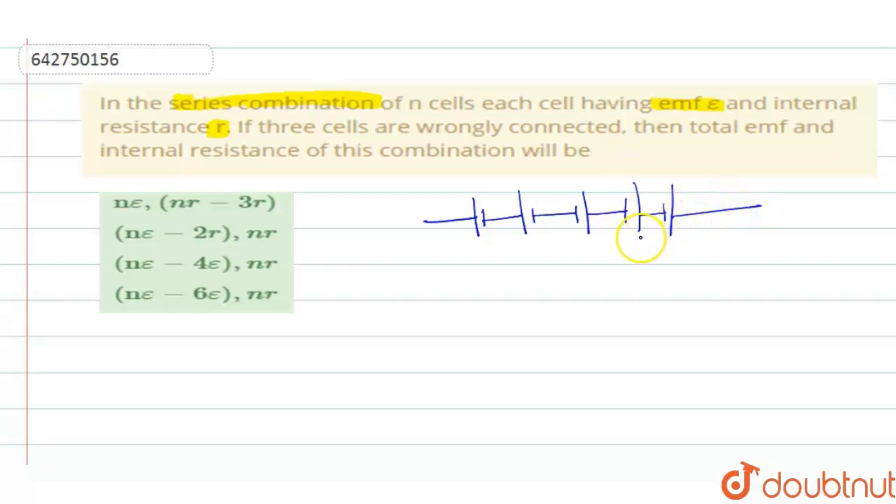So when this happens, it means that how many cells you have. Initially, if you are saying that you have N cells, the remaining cells will be how much? Remaining cells will be in that N. We will remove that three cells and you will be having N minus three cells. Remaining cells will be N minus three, which is connected with correct polarity, and the remaining three with opposite polarity.